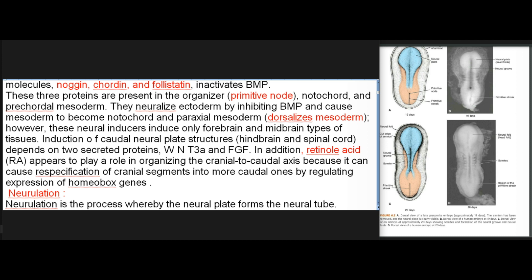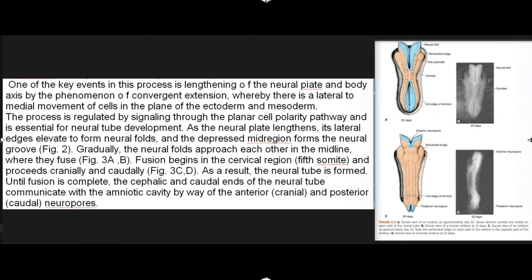Neurulation is the process whereby the neural plate forms the neural tube. One of the key events in this process is lengthening of the neural plate and body axis by the phenomenon of convergent extension, whereby there is a lateral to medial movement of cells in the plane of the ectoderm and mesoderm. The process is regulated by signaling through the planar cell polarity pathway and is essential for neural tube development. As the neural plate lengthens, its lateral edges elevate to form neural folds, and the depressed midregion forms the neural groove. Gradually, the neural folds approach each other in the midline, where they fuse. Fusion begins in the cervical region and proceeds cranially and caudally, and as a result, the neural tube is formed.